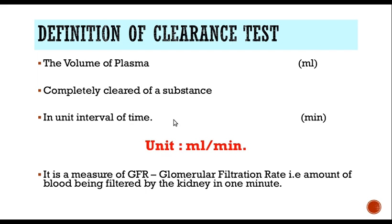So the units of a clearance test is ml per minute. The definition of clearance test is the volume of plasma completely cleared of a substance in a unit interval of time. It is a measure of the GFR, or the glomerular filtration rate — that is, the amount of blood that is being filtered by the glomerulus of the kidney in one minute.